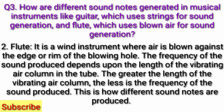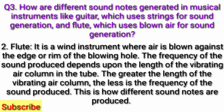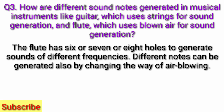Flute is a wind instrument where air is blown against the edge or rim of the blowing hole. The frequency of the sound produced depends upon the length of the vibrating air column in the tube. The greater the length of the vibrating air column, the less is the frequency of the sound produced. The flute has six, seven, or eight holes to generate sounds of different frequencies. Different notes can also be generated by changing the way air is blown. This is how different sound notes are generated.